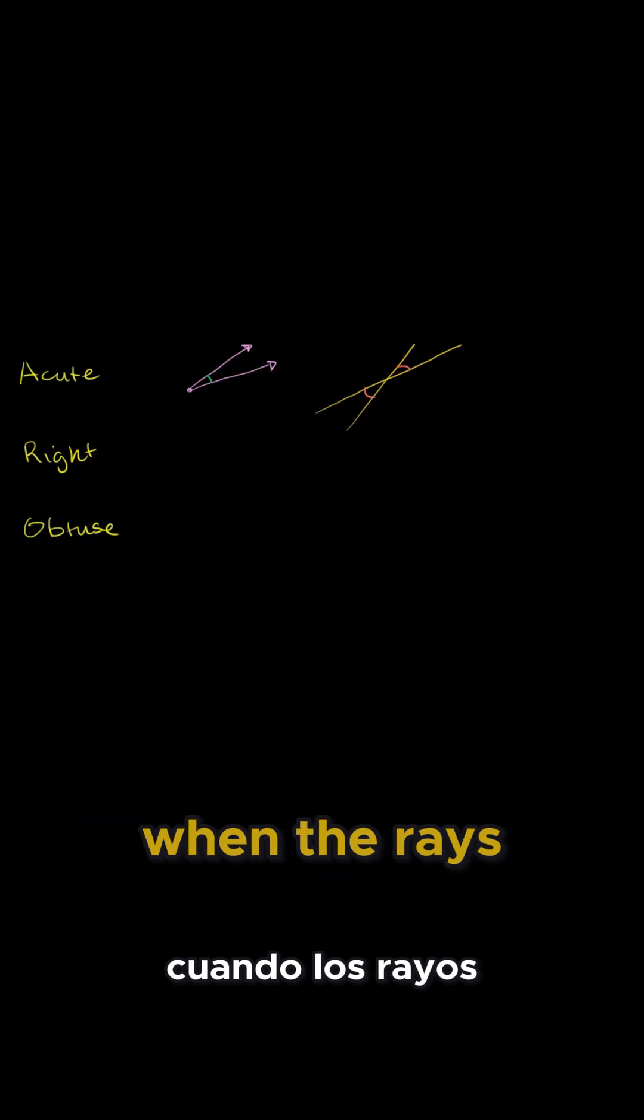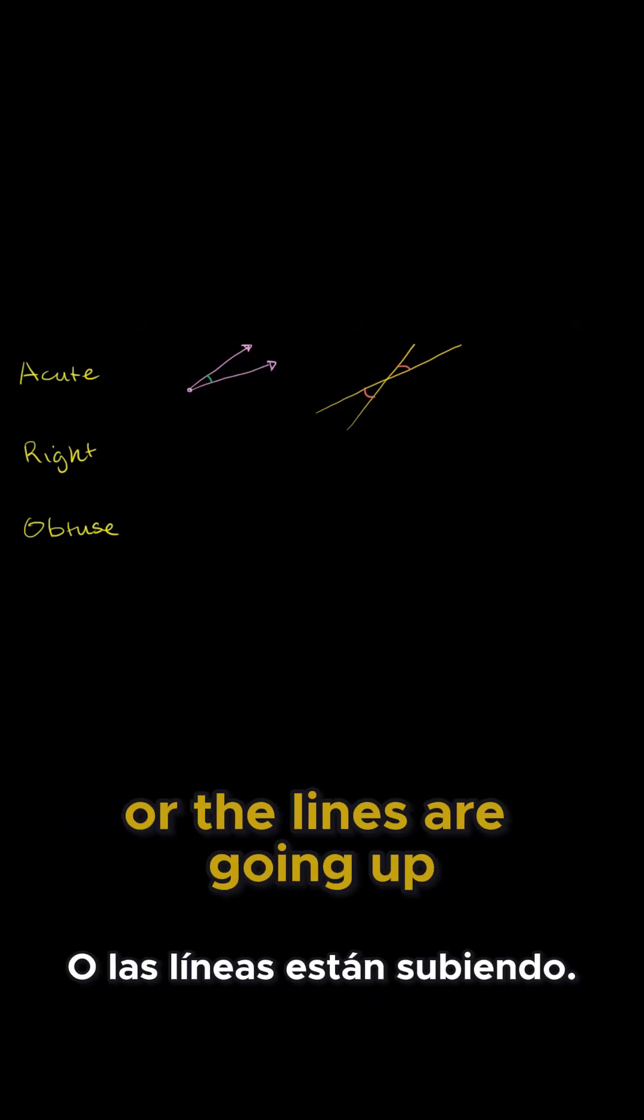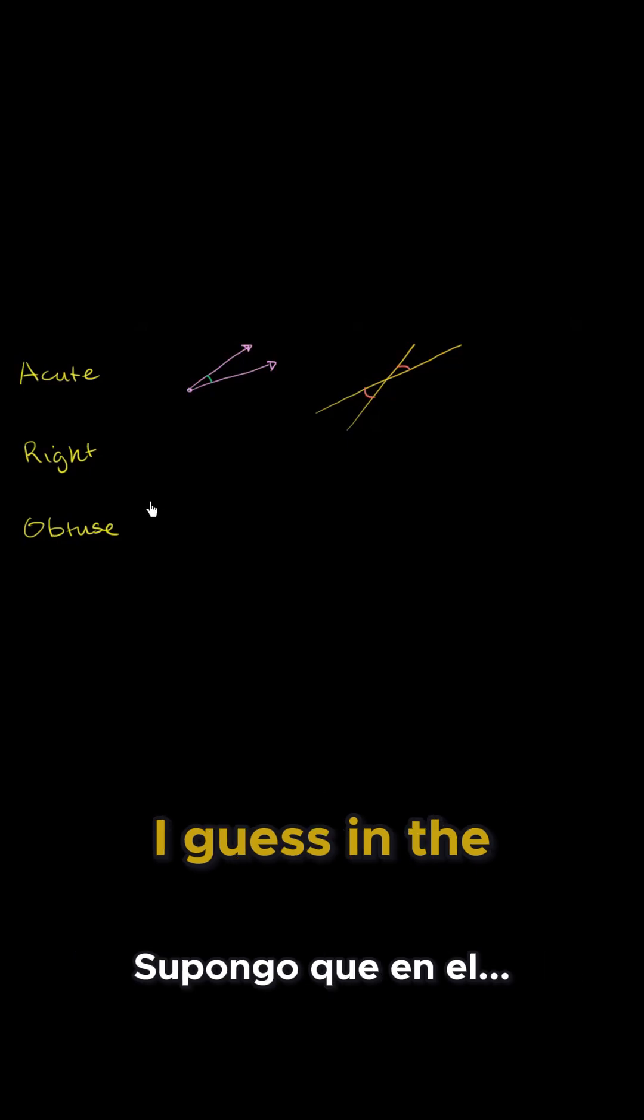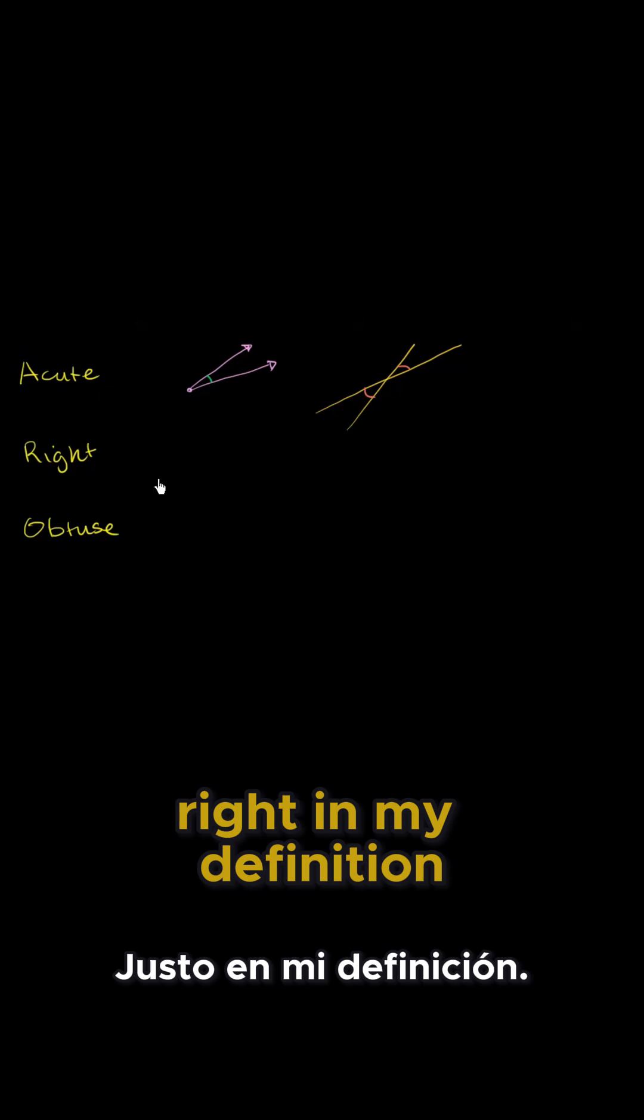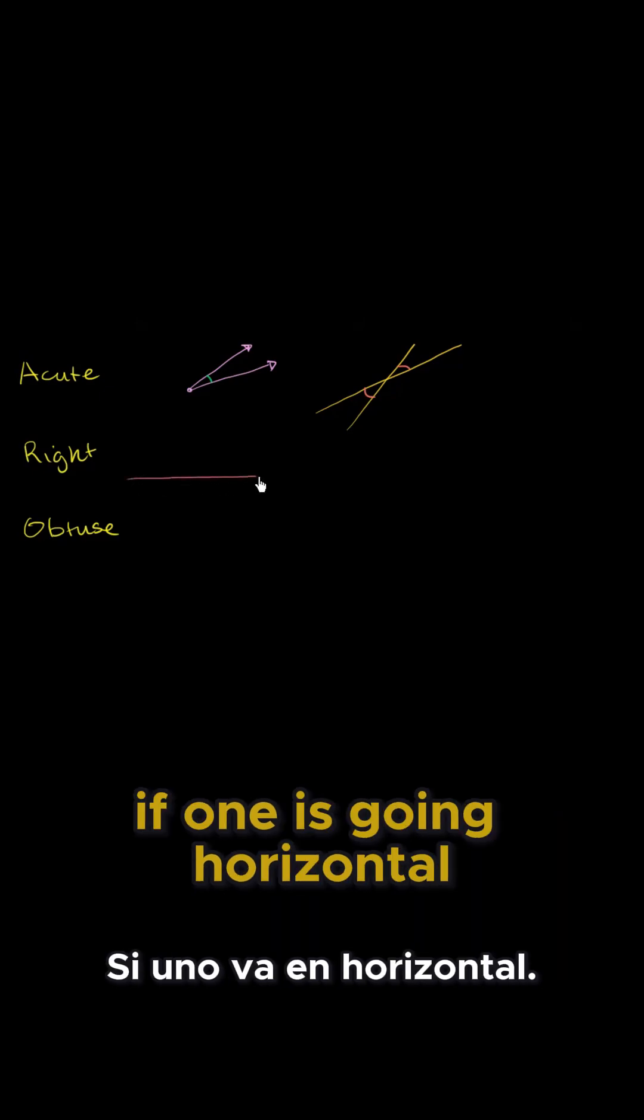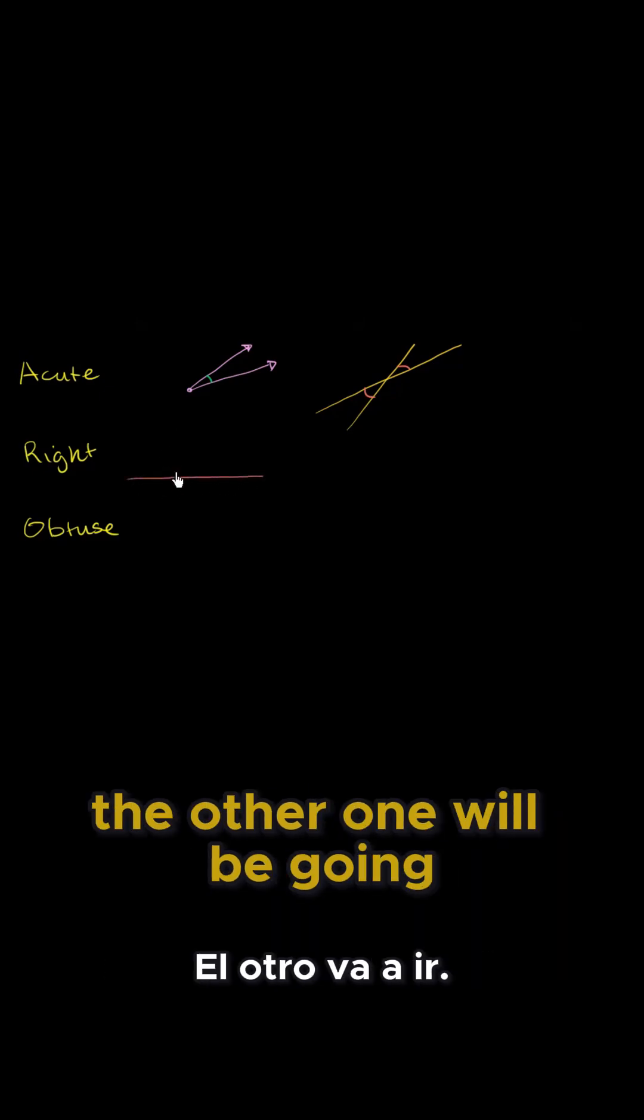Right angles are when the rays or the lines are going—I don't want to use the word right in my definition, but they're kind of, if one is going horizontal, the other one will be going vertical.